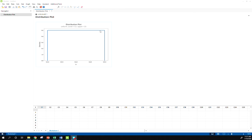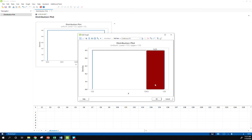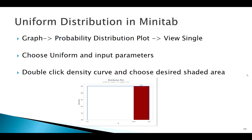It gives me this distribution. It's a nice picture, much prettier than the picture I drew a minute ago. To find a probability, we double-click on this density curve, say shaded area. Remember, we wanted greater than 124.5. Here we go. That 0.25 agrees with what we found earlier. So in Minitab, easy enough.